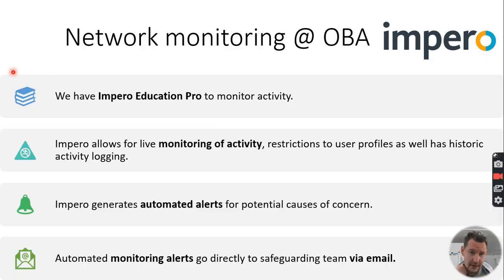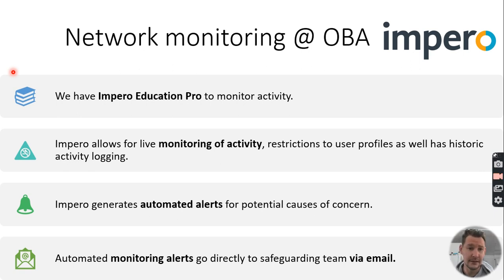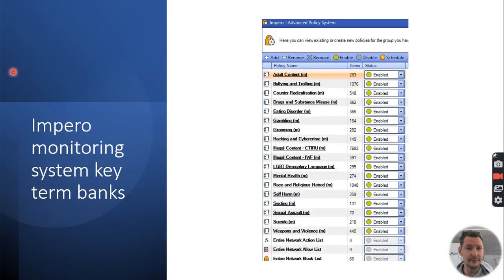For network monitoring, we use a piece of software called Impero Education Pro, which allows staff at school to monitor activity live or view historic activity. Part of that system also generates automated alerts for anything that may be a particular cause of concern, which is then screened and monitored by myself and the rest of the safeguarding team.